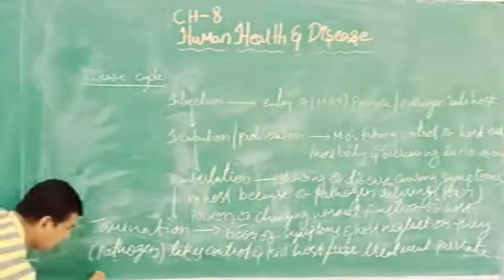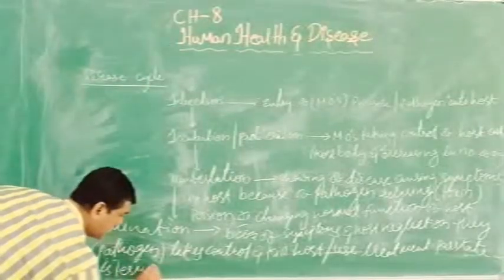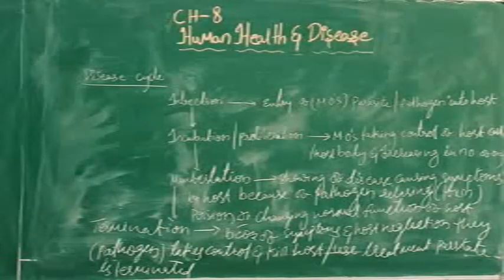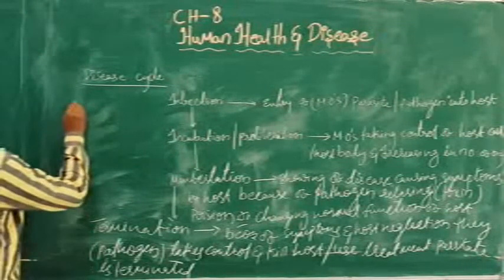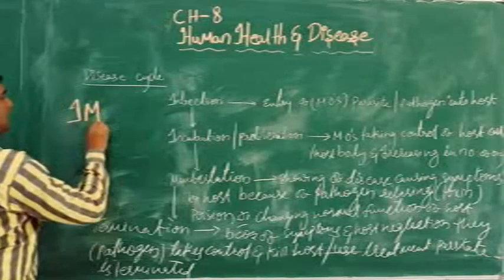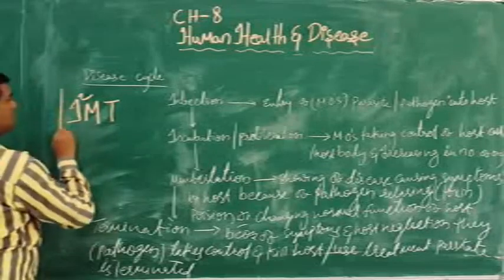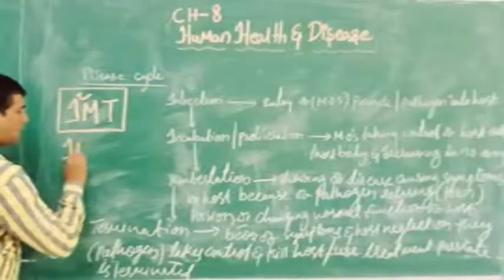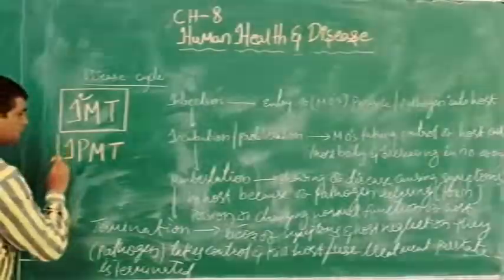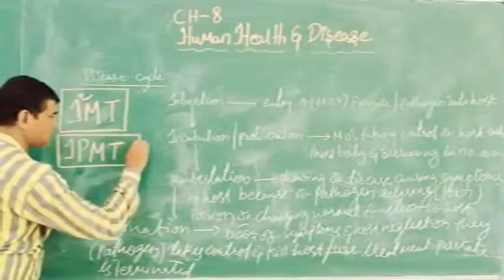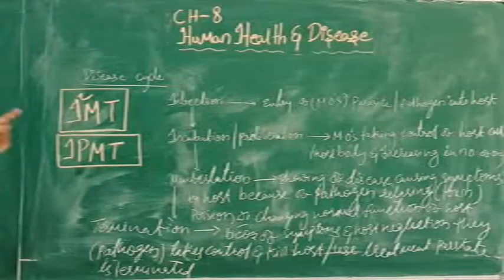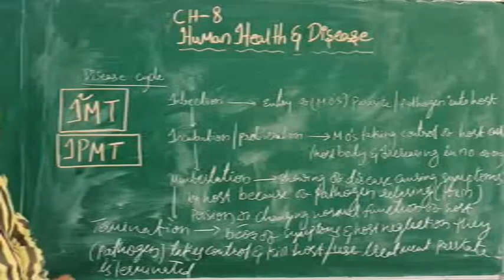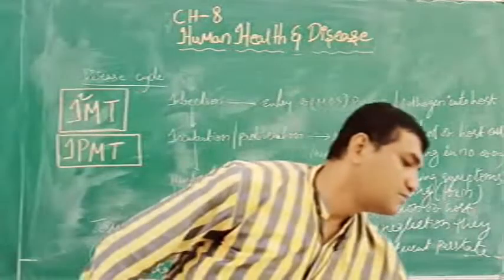The fourth stage is termination — because of symptoms and host neglection, the pathogen takes control, either through treatment or the parasite terminates. So to remember: Infection, Incubation, Manifestation, Termination. These are the four stages of a disease. Thank you.